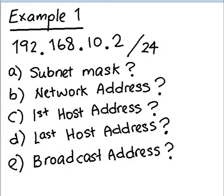Let's take a look at this example. Given the IP address 192.168.10.2/24, we are going to find the following things: first the subnet mask, network address, first host address, last host address, and broadcast address.